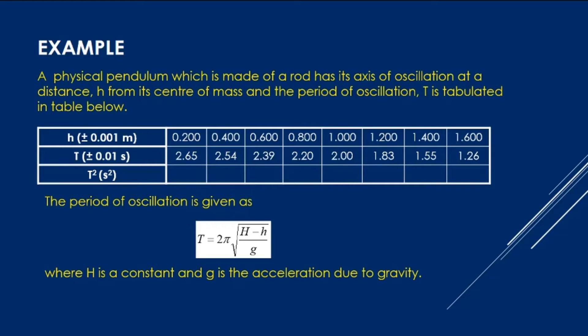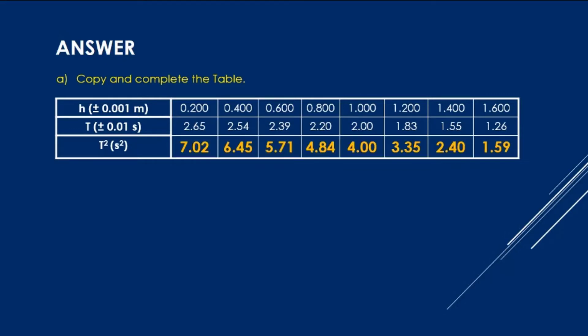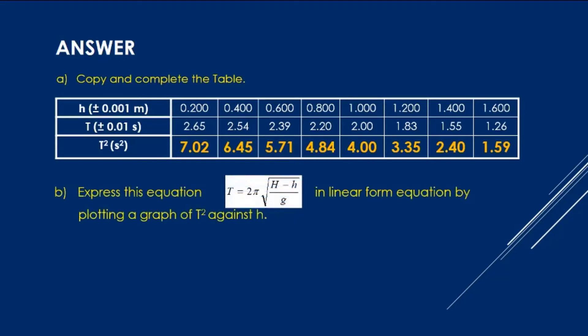Now we want to find T squared, so you have to calculate T squared first. Please copy the table and calculate for T squared. Now let's check your answer. This is the value for T squared: 7.02, 6.45, 5.71, 4.84, 4.00, 3.35, 2.40, 1.59. Please make sure all the data is consistently in two decimal points.